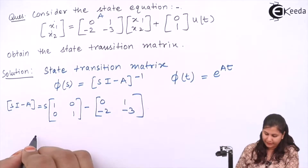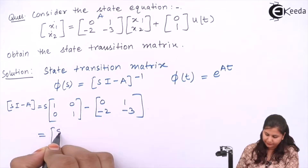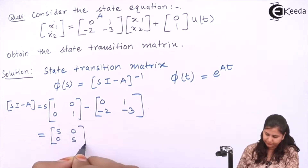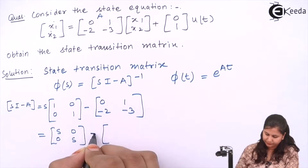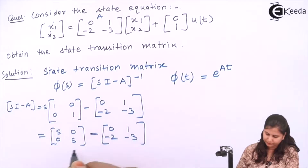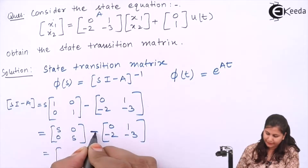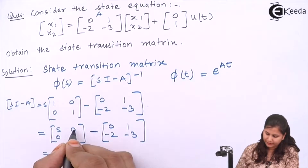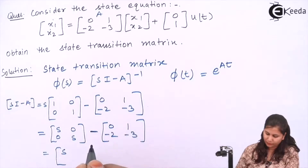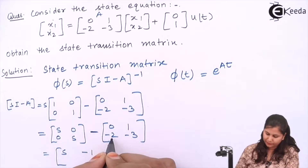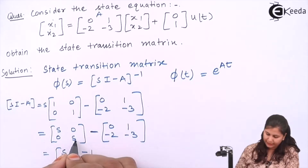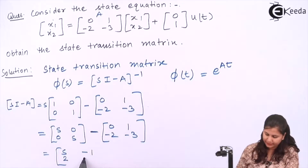So sI minus A will be s multiplied with the identity matrix [1, 0; 0, 1] then minus A. This gives us [s, -1; 2, s+3]. So this is sI minus A.